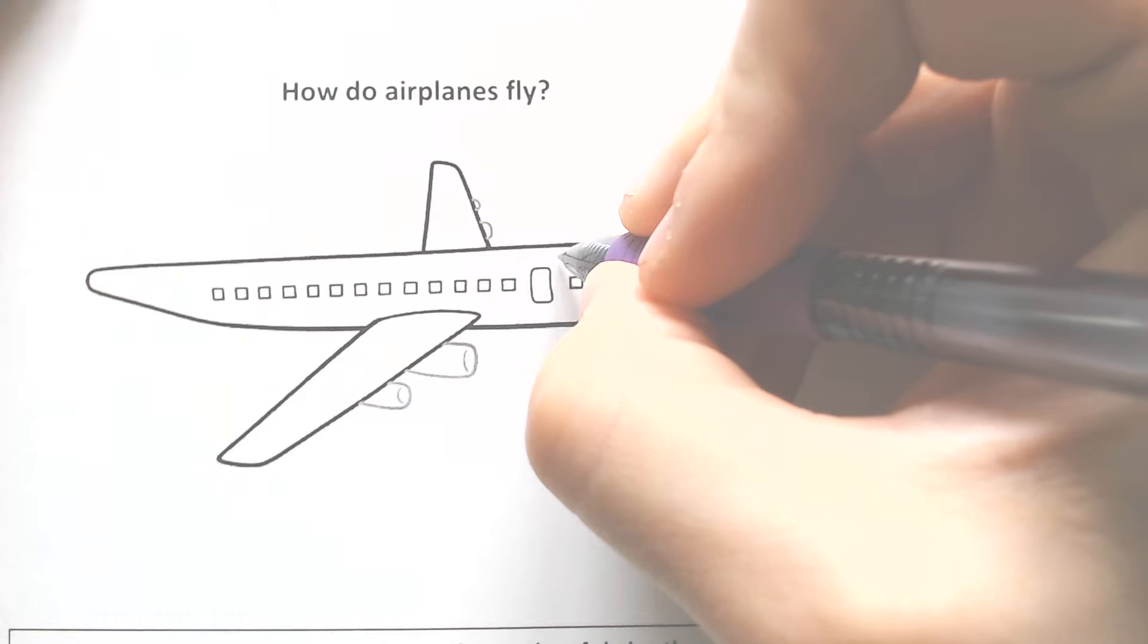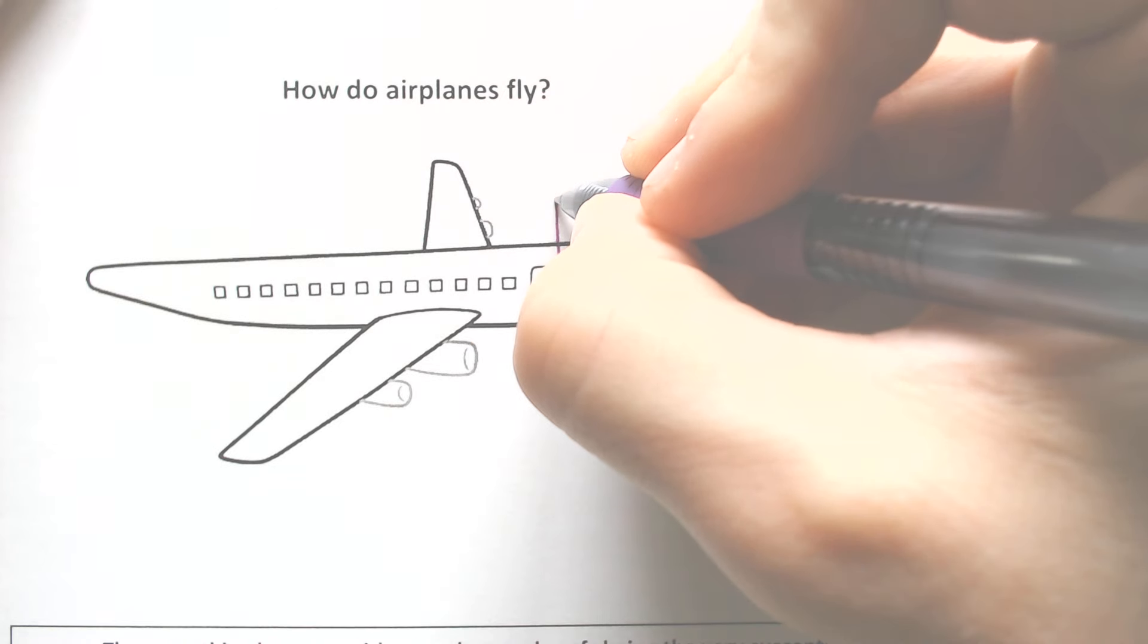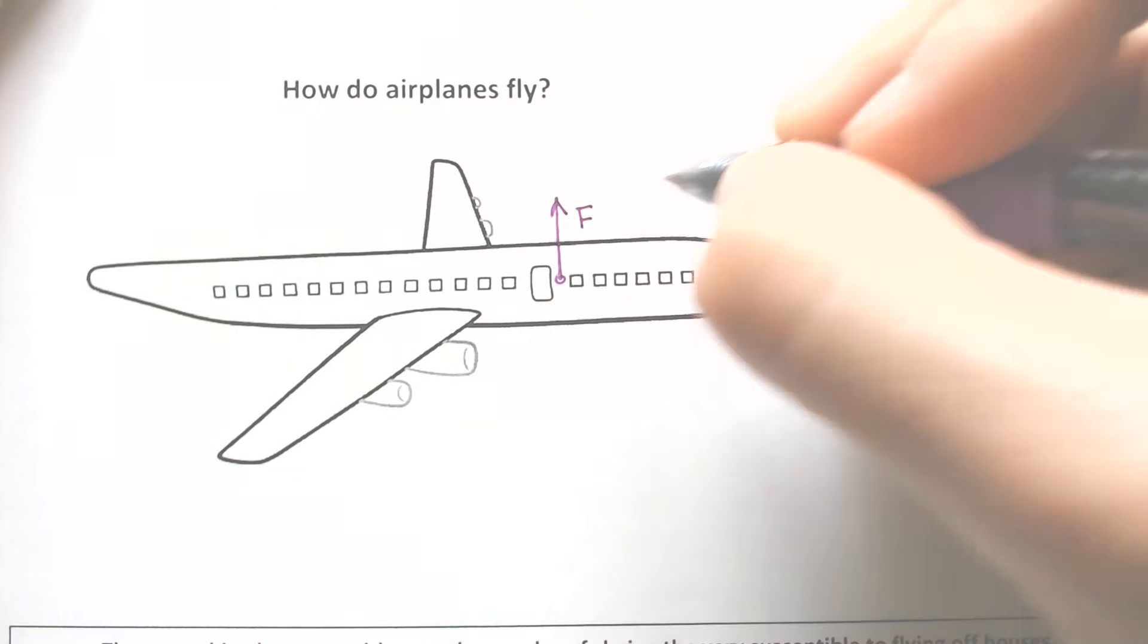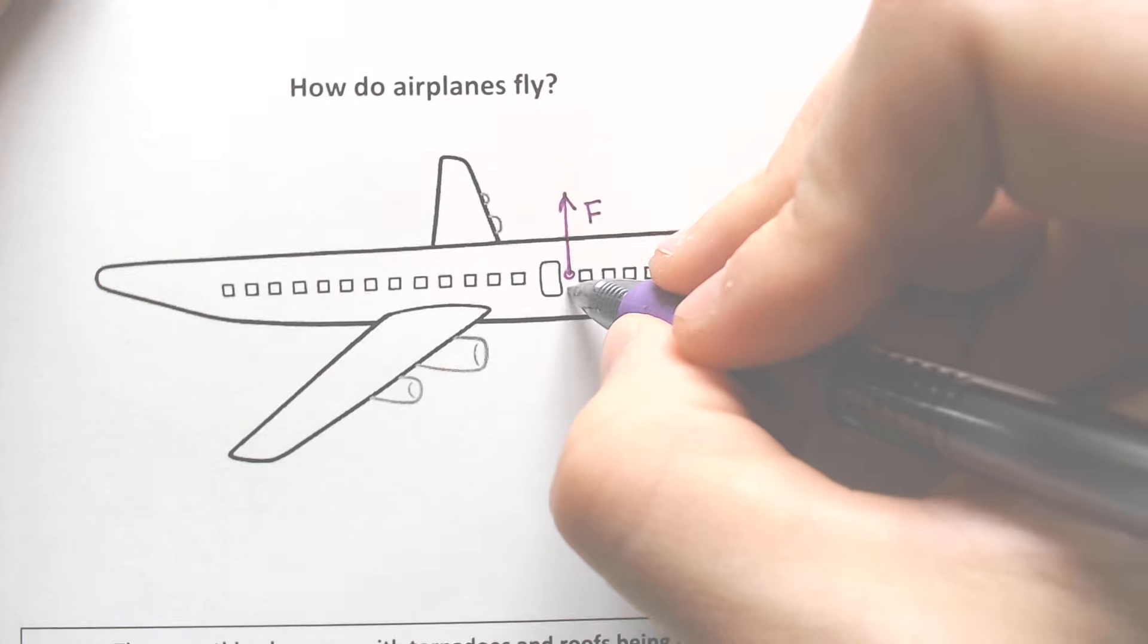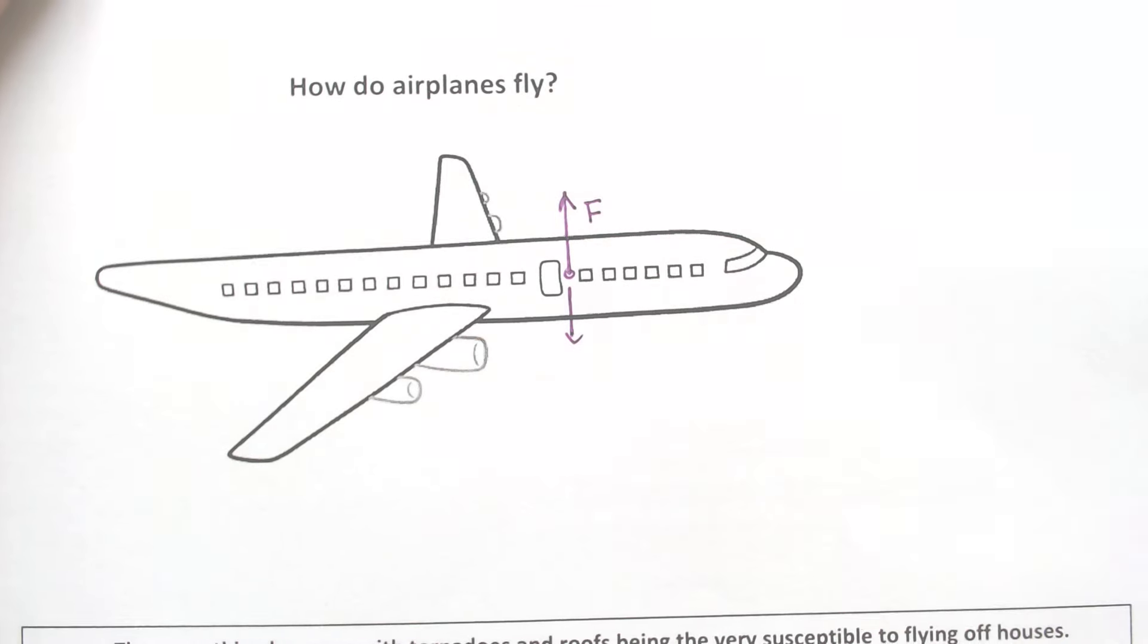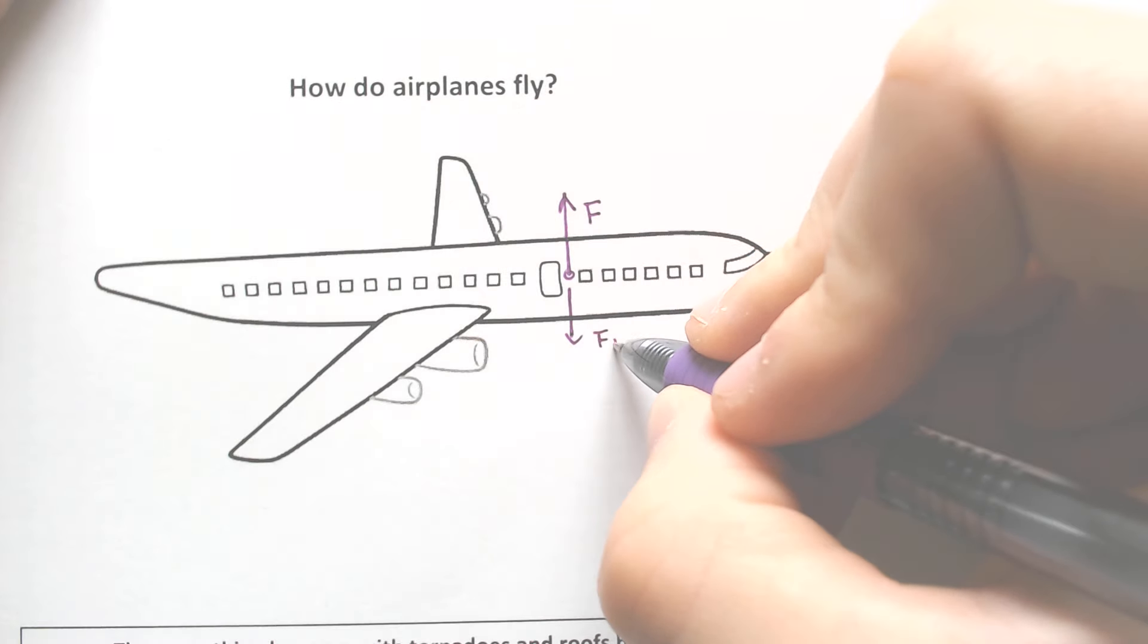If we draw a free body diagram, the force going up has to be more than the force going down. So that force down has to be smaller.